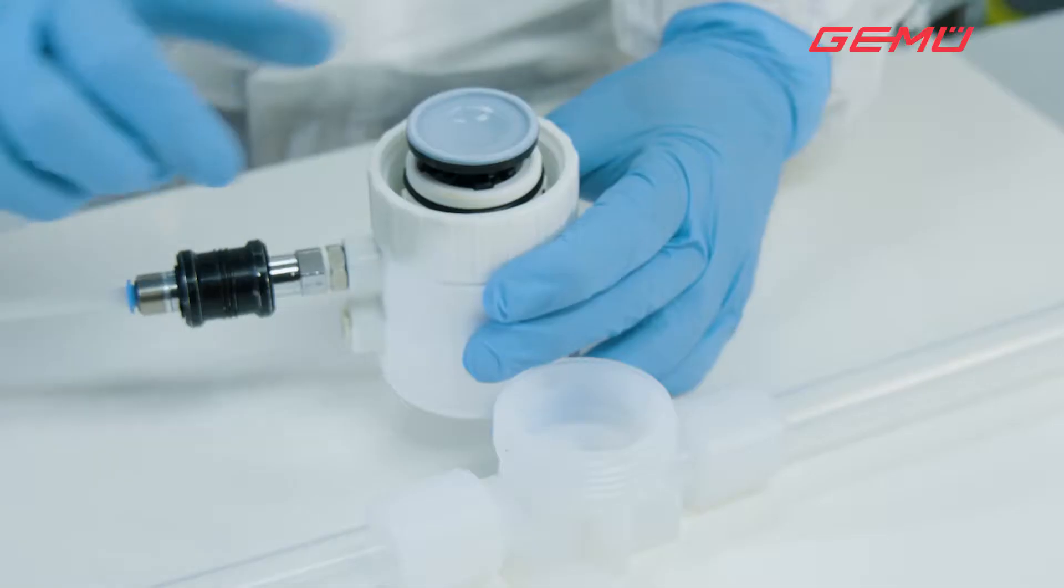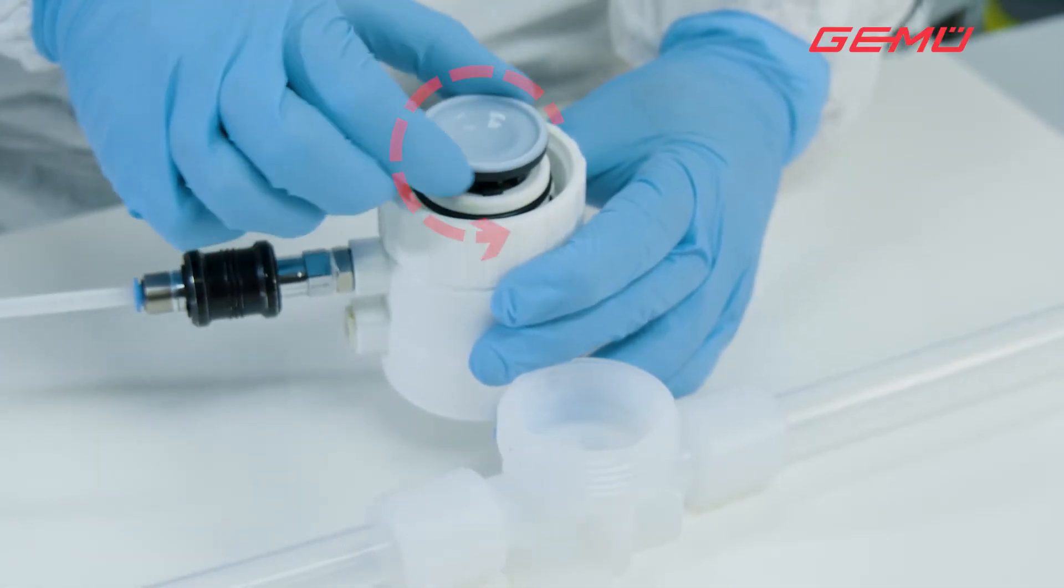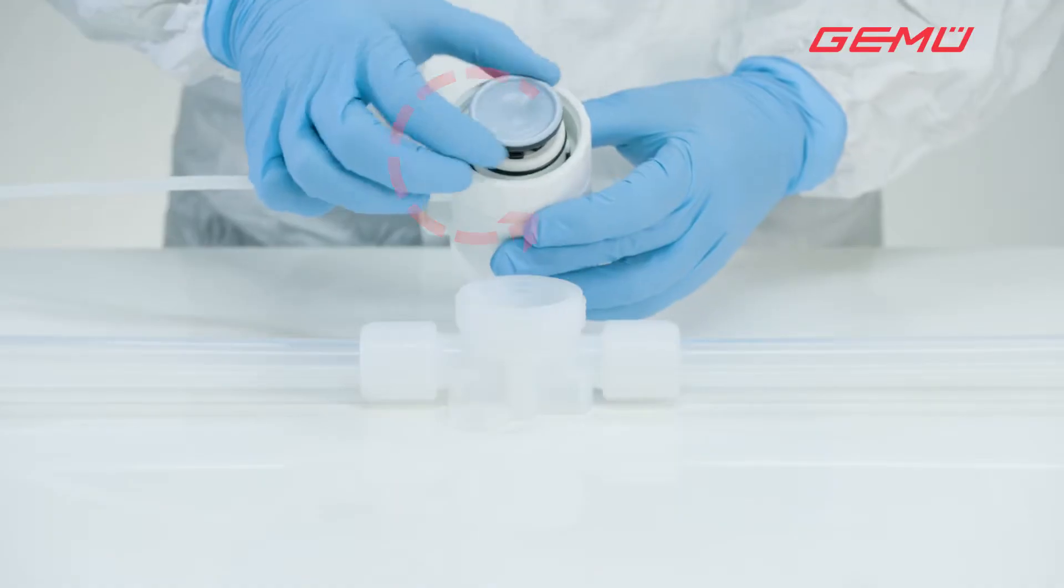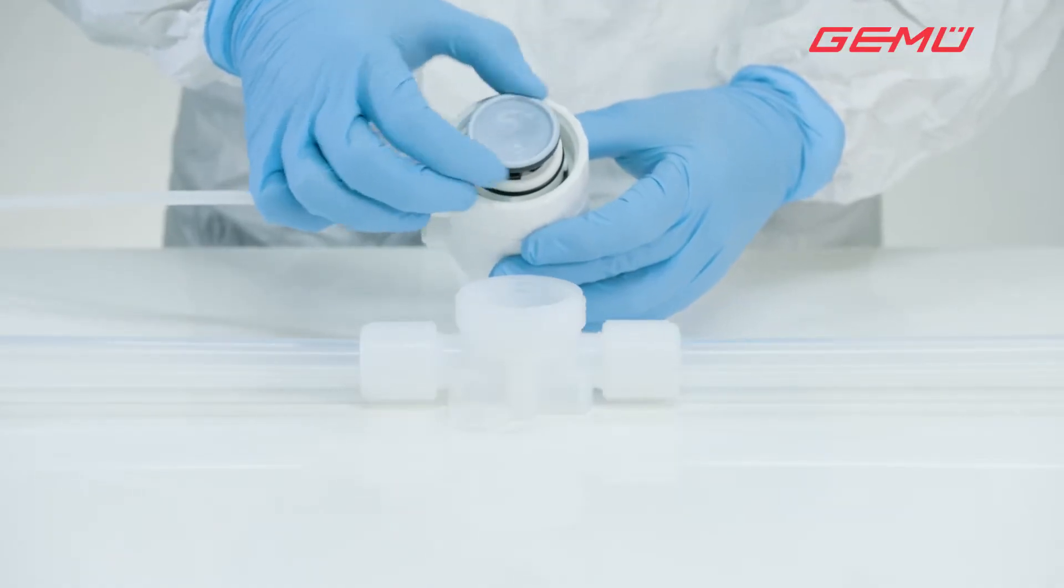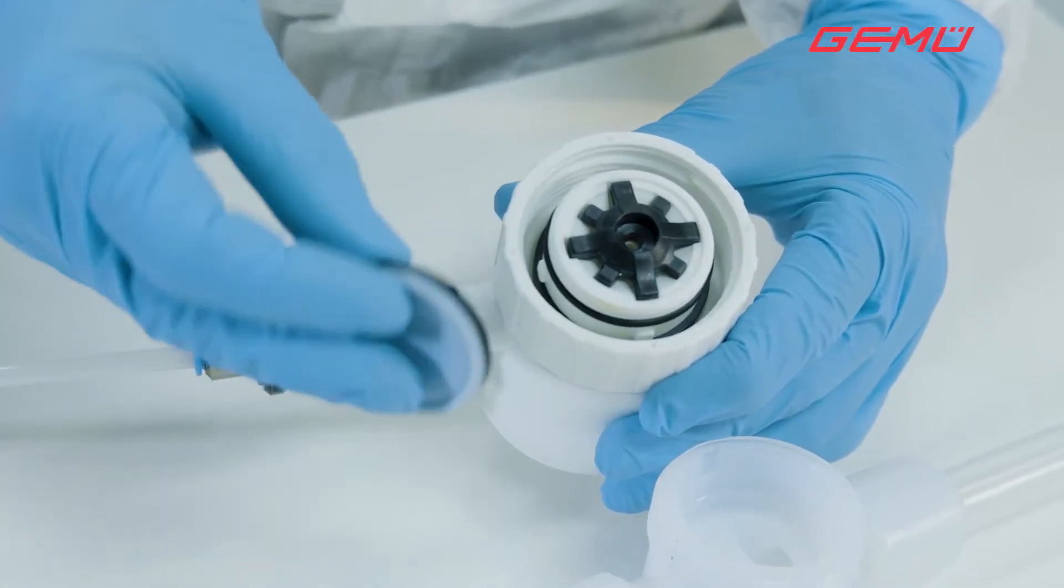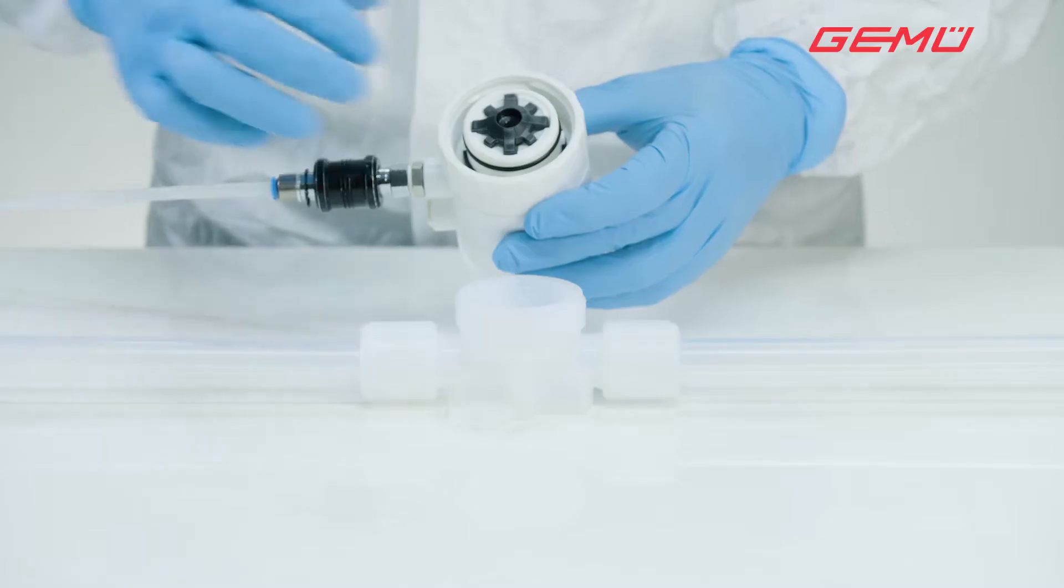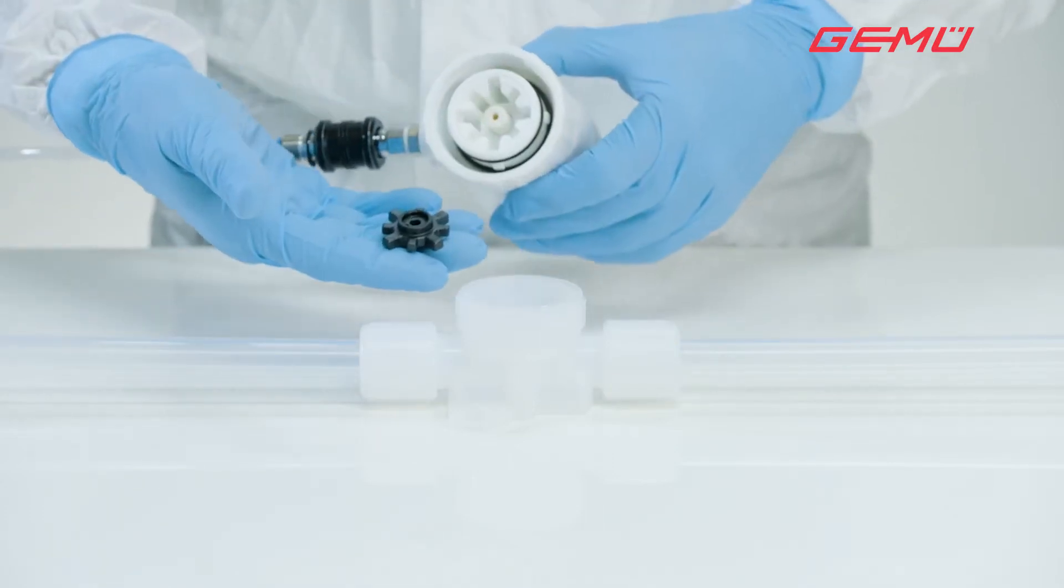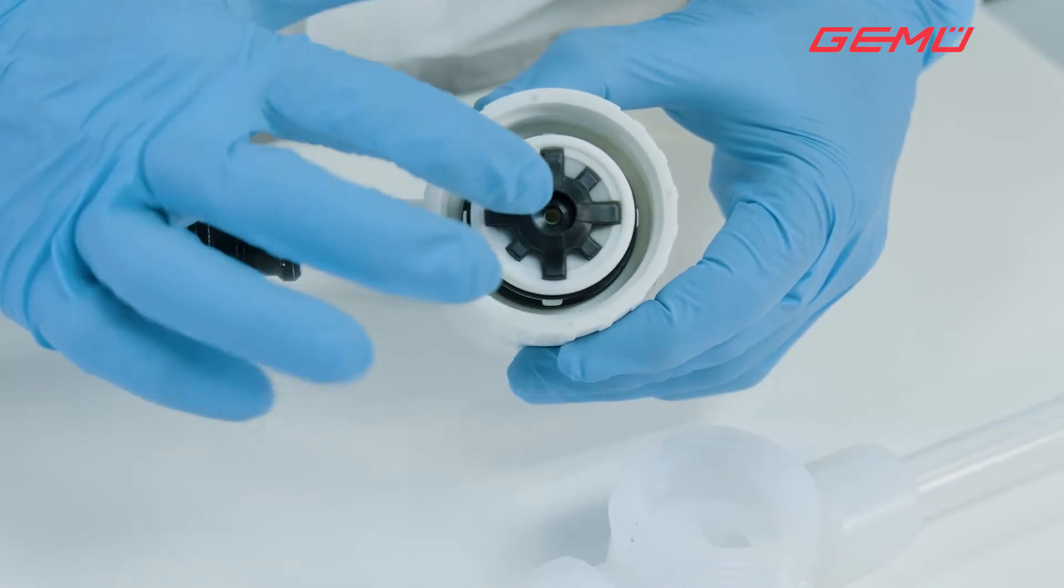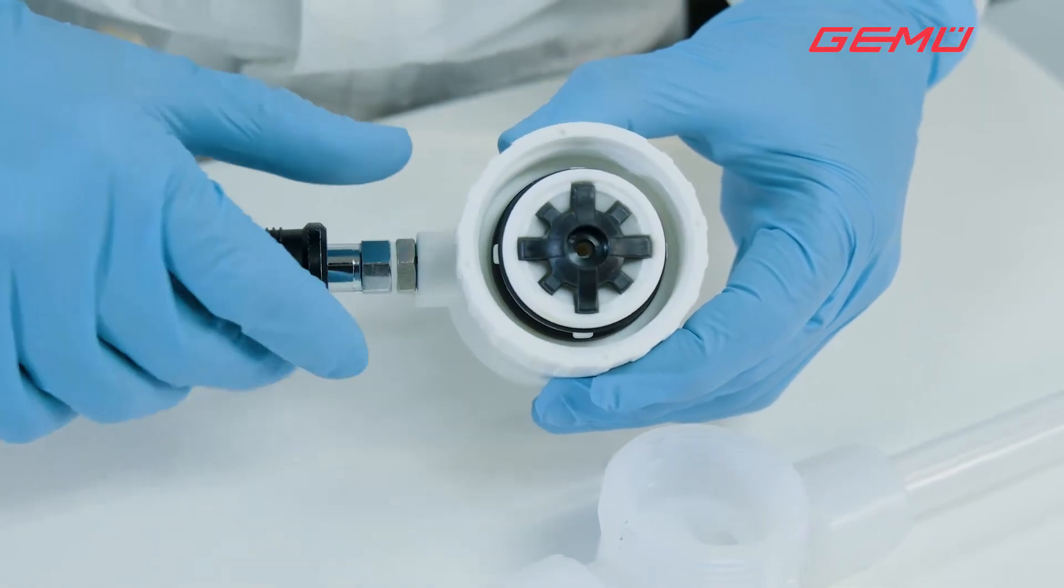Move the actuator to the closed position. First, unscrew the old diaphragm anti-clockwise. Doing so may cause the compressor to fall out of the actuator. Reinsert it in the correct position.